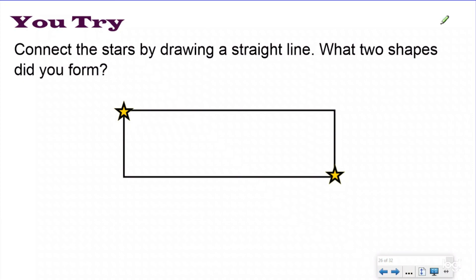So the first thing I want to do is I'm looking for two shapes. I want to identify important information, even when it's not a word problem. And then I want to split this rectangle part going from the star to the star. And when I do that, I see that I have made two triangles. So the two shapes I formed were triangles. That is the answer to my question.